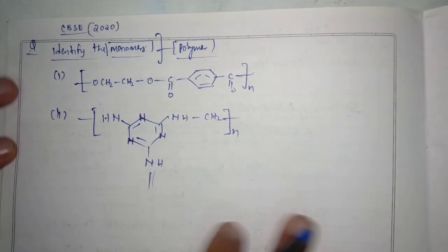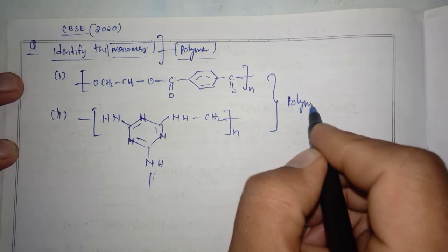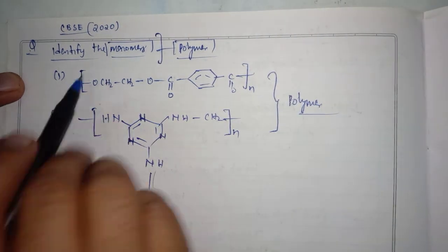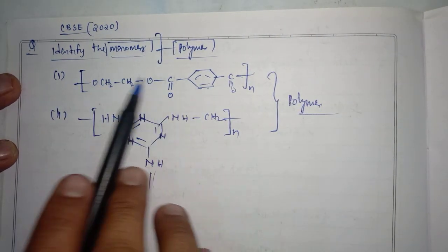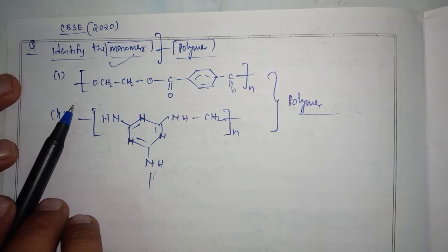So these two arrangements are of polymer, name is not given. So we have to identify this arrangement and express what are the different possible monomers present in both these structural arrangements.